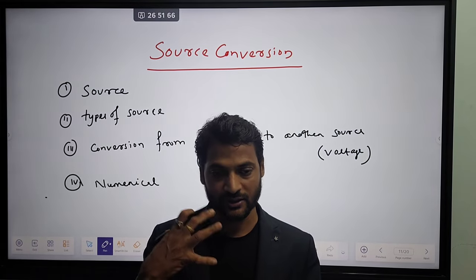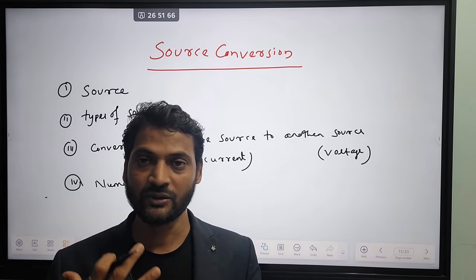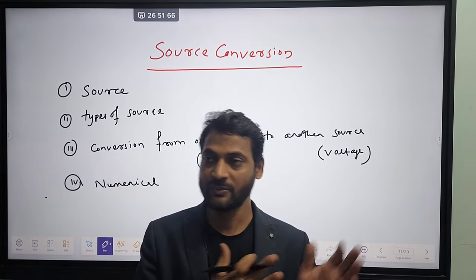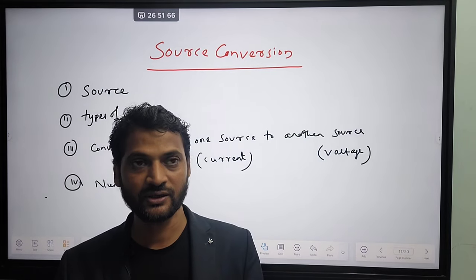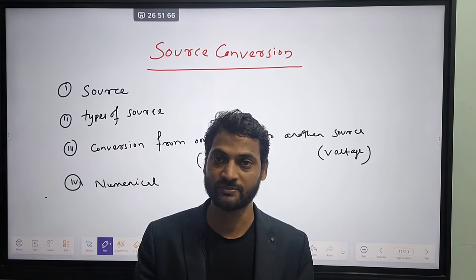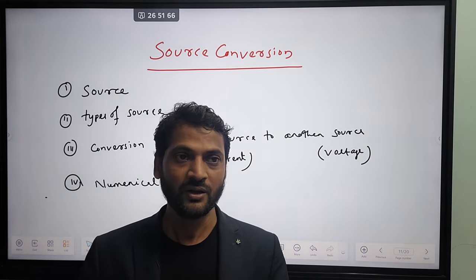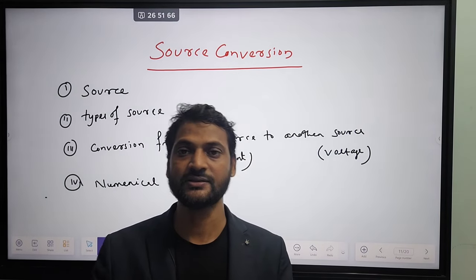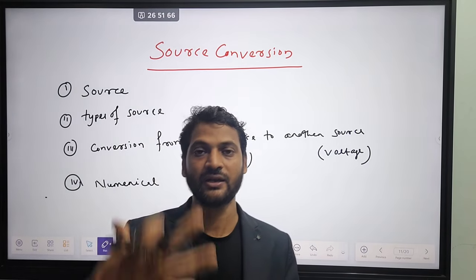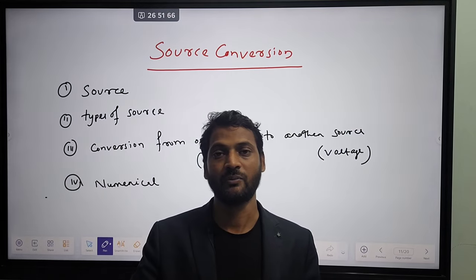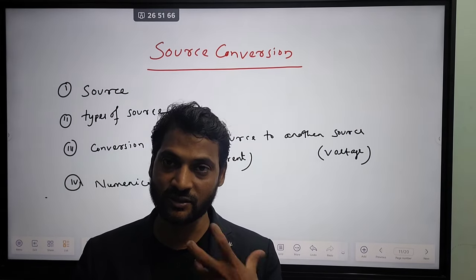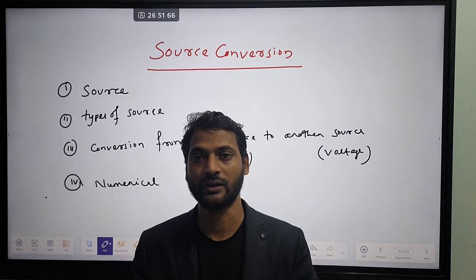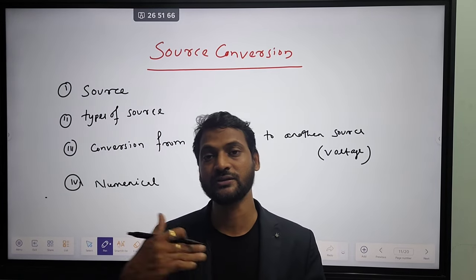What is electrical source? Electrical source is something which can deliver some electrical power. As I have told in my previous video, generator and battery are the sources. The actual definition of source is: which can energize the circuit, which can energize the electrical circuit by providing voltage or current. Based on that we can classify source in two categories — one is voltage source, second is current source.